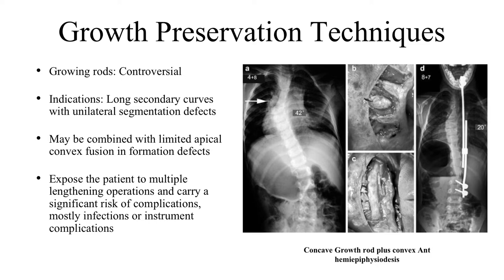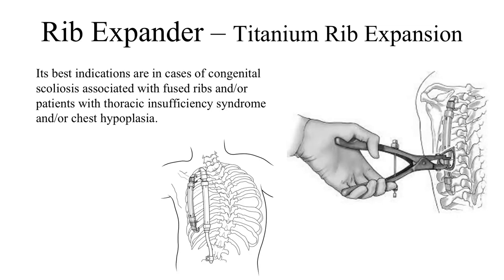Growth preservation techniques: the use of growing rods in congenital scoliosis can be utilized in cases that develop long secondary curves when long fusion is not practical due to the remaining growth potential of the patient. It may be combined with limited epiphyseal convex fusion in formation defects.